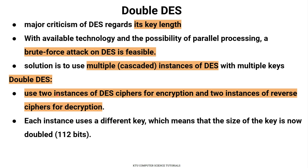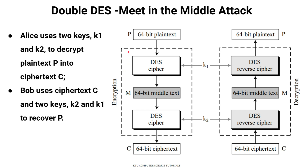In Double DES, we use two instances of DES with different keys in each instance. So the size of the key is double the original key size. The possible type of attack on Double DES is the meet-in-the-middle attack.